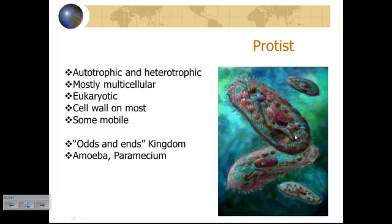Now we're looking at protists. As I see the list of characteristics common to protists: they're autotrophic and heterotrophic — they can either feed themselves or feed on other things. Many are multicellular, although they could also be unicellular. Eukaryotic — they have a nucleus in their cells. Most do have a cell wall. Some are mobile, meaning they can move around on their own during at least part of their life. You've probably seen protists looking at pond water under a microscope — things like paramecium or an amoeba.